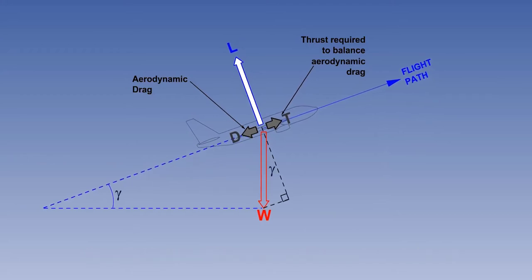Weight, W, can be resolved into two components, one opposing lift with a value of W times cosine gamma, and the other acting in the same direction as drag with the value of W times sine gamma.